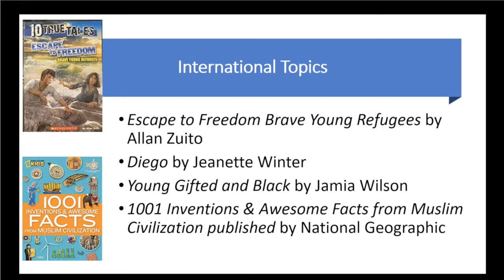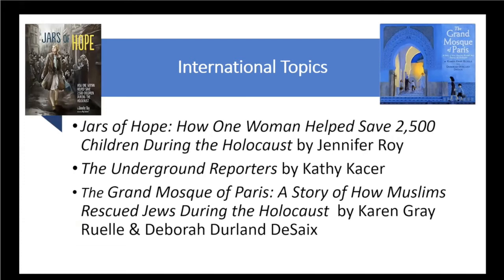Jars of Hope is about a woman who helped save 2,500 children during the Holocaust. The Underground Reporters deals with Czechoslovakian teenagers who were trying to defy the Nazis. The Grand Mosque of Paris tells the story of how Muslims rescued Jews — and also allied soldiers — during the Holocaust when Paris was under siege. Notice that the illustrations in the book are amazing, just gorgeous.